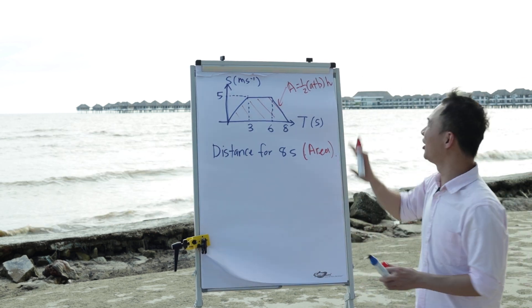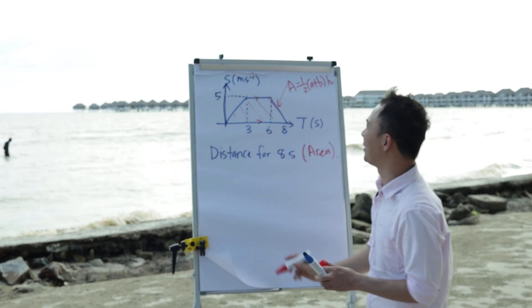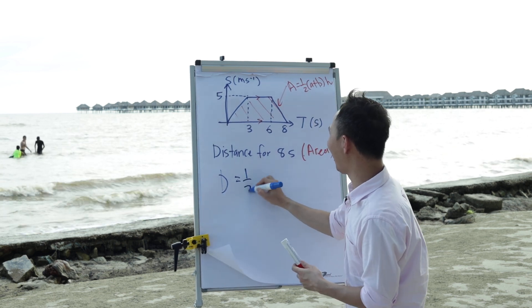This is the area formula for trapezium. A and B will be these two parallel lines. So in order to find the distance traveled, I will need to use that formula which is half,